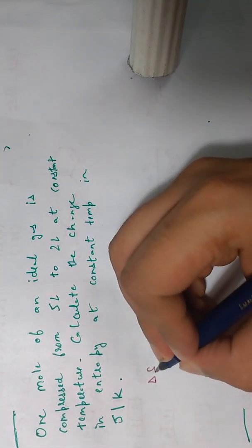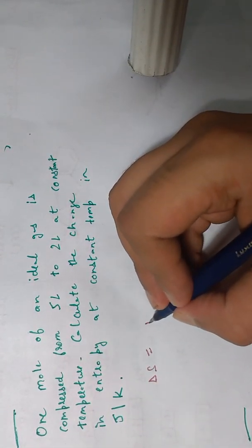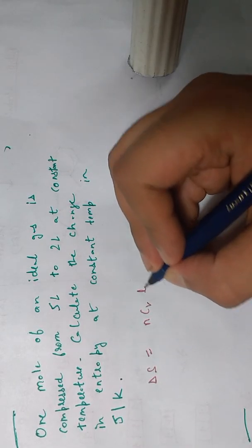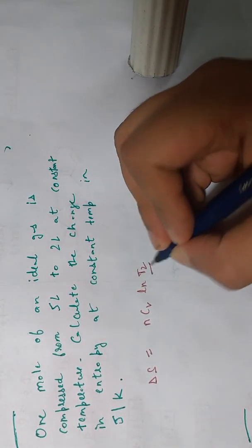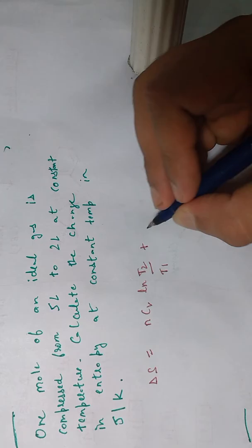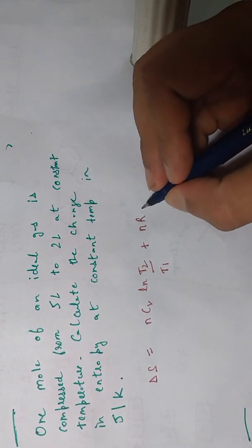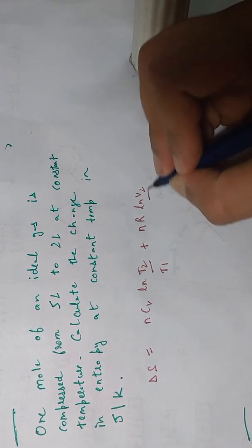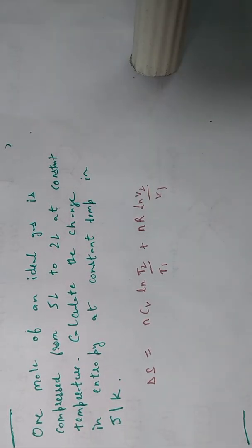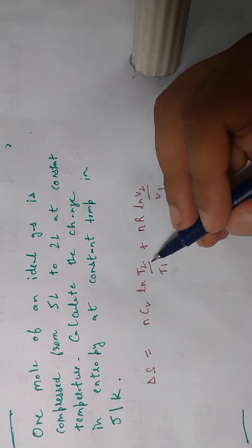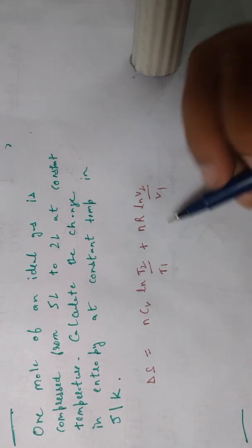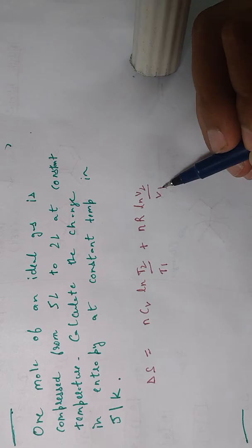First, we need to know the formula. The formula is really basic: Delta S equals n CV ln(T2/T1) plus n R ln(V2/V1). T2 is the final temperature, T1 is the initial temperature, V2 is the final volume, and V1 is the initial volume.